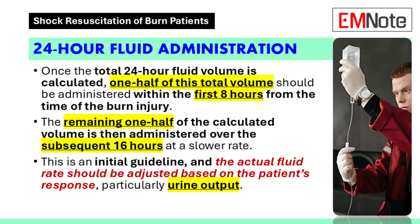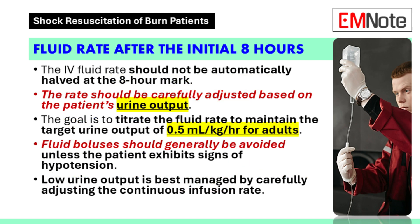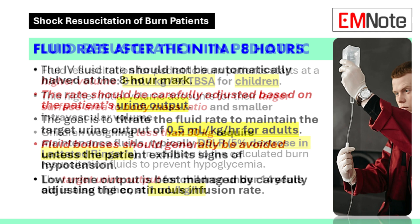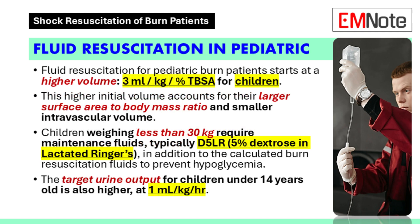After the initial 8 hours, we don't automatically cut the IV fluid rate in half. We adjust the rate based on the patient's urine output, keeping the goal at 0.5 mL/kg/hour for adults. Unless the patient is hypotensive, we generally avoid fluid boluses. If urine output is low, we carefully adjust the continuous infusion rate upward.